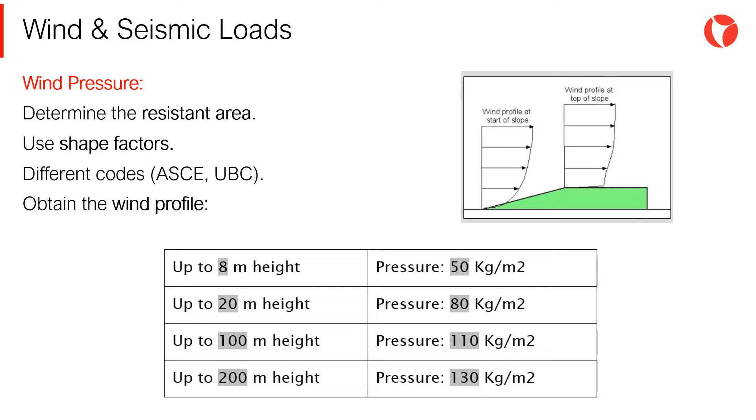To analyze the wind load that will be acting on a pressure vessel, the cross section of the equipment must be known—in other words, the resistant area. Depending on the local legislation, different methods will be followed to determine the wind profile as indicated in the figure.